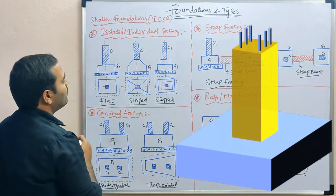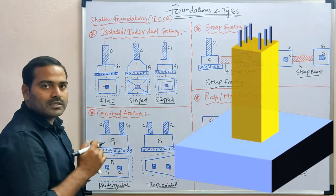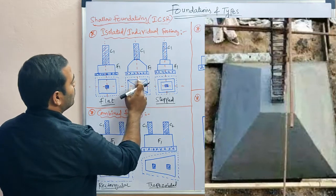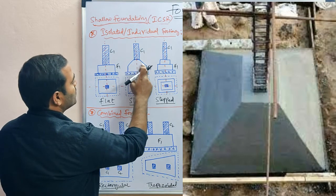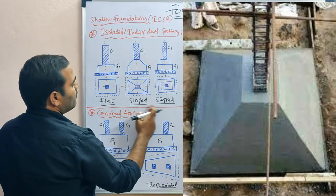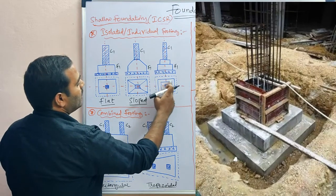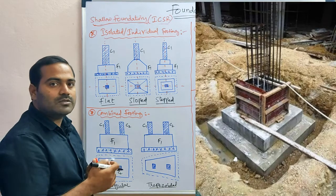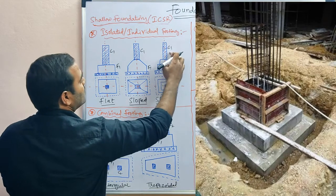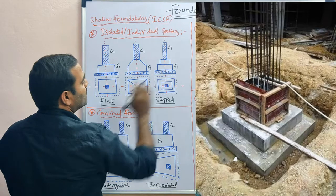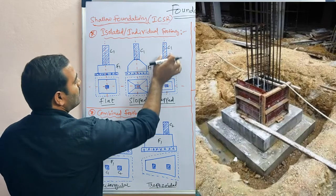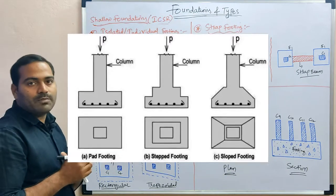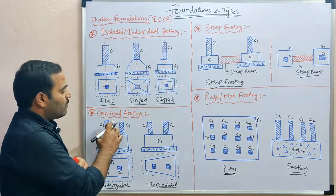In flat footing, the footing is completely flat with no slope or steps. In sloped footing, slopes are given as visible here. The third type is stepped footing, which has step one and step two — in some cases a step three as well. These are the column and PCC base configurations for isolated or individual type footings.